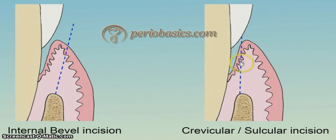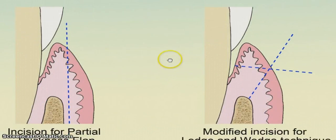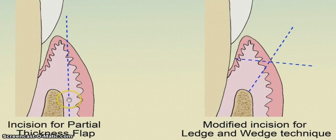The crevicular incision is directed towards the alveolar crest from the gingival crevice, and is also used in the modified Widman flap operation. This incision here is called the incision for partial thickness flap. In this incision, we are not elevating the flap completely but leaving the periosteum along with the bone, so it is used for partial thickness flaps.